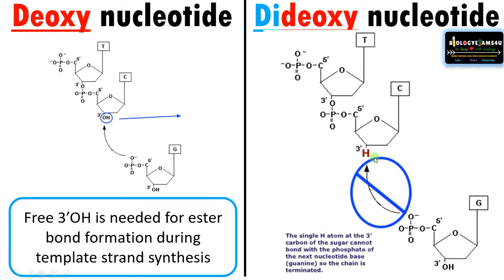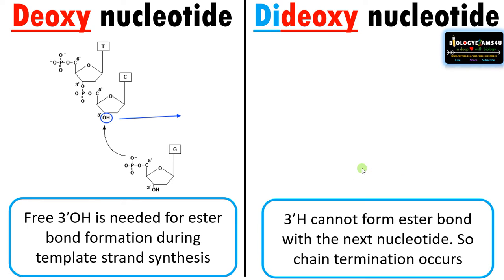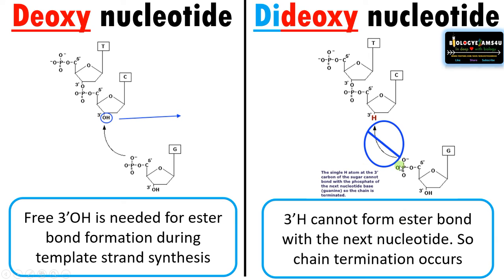Whereas in the case of dideoxynucleotide, the third carbon position — the 3' end — has only hydrogen without oxygen. So the incoming nucleotide cannot form an ester bond, and thus chain termination occurs, meaning DNA strand synthesis stops at this nucleotide because there is no free 3' OH to form the ester bond. Hydrogen cannot form an ester bond with the next nucleotide, so chain termination occurs when a dideoxynucleotide is incorporated into the growing chain.